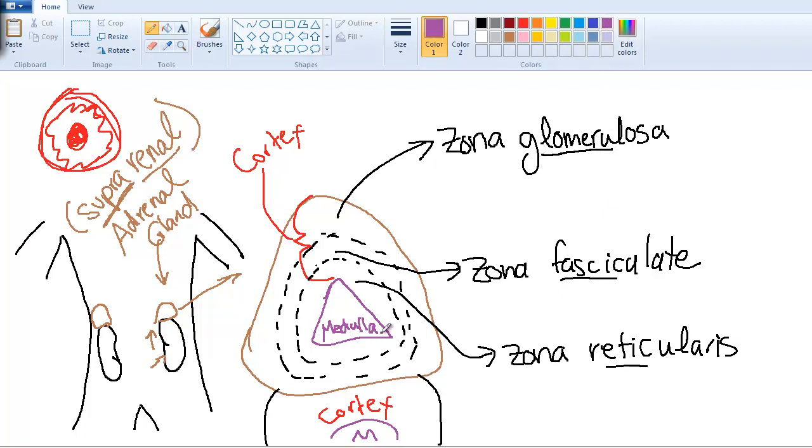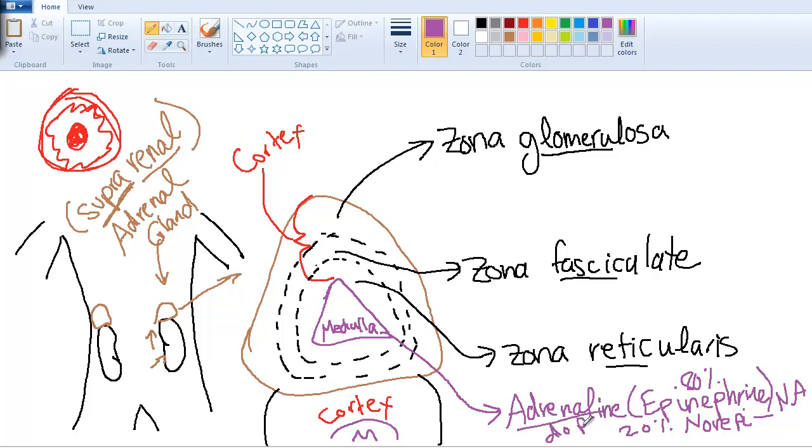In the medulla we are secreting adrenaline, also known as epinephrine. Epinephrine is about 80% of the secretion, and 20% is norepinephrine or noradrenaline. There's also some dopamine. The adrenal medulla comes from neurocrest cells and they're considered modified post-sympathetic neurons. You should study the enzyme tyrosine and its pathway, how it's converted into these neurotransmitters or hormones being released into the blood.